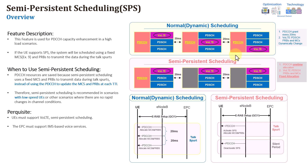With semi-persistent scheduling, in order to save the PDCCH and reduce congestion, the PDCCH allocation is done only one time at the beginning of the call. The PDCCH grant includes information about the PDCCH resources — resource blocks and MCS. In this case it's a fixed allocation: a fixed number of resource blocks with a fixed location and also a fixed MCS, for example MCS 15 or 14.